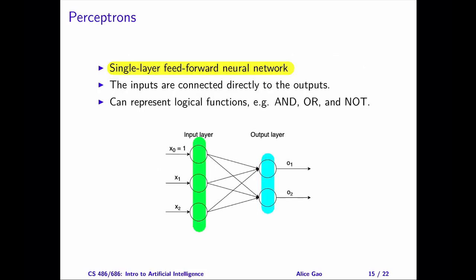This network appears to have two outputs, but the two outputs are independent. We can split up the network into two independent networks, each containing one perceptron. And we can learn the weights in each network separately. Because of this, I'm going to focus on discussing a single perceptron at a time.